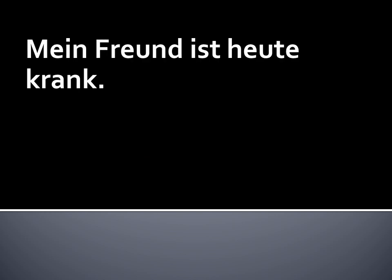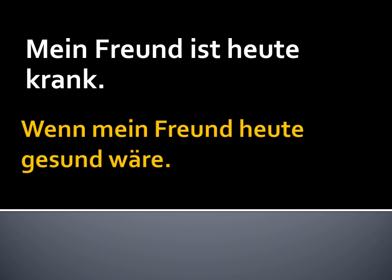Next sentence: 'Mein Freund ist heute krank' — my friend is sick today. The verb is 'ist'. So when making Konjunktiv 2, we use 'wäre'. What is my wish? 'Wenn mein Freund heute gesund wäre' — if my friend would be healthy today. This is my wish, although he is not healthy. We used 'wäre' because in the normal sentence the verb is 'ist', which is the 'sein' form. It is very important to identify the verb and write accordingly in Konjunktiv 2 form.